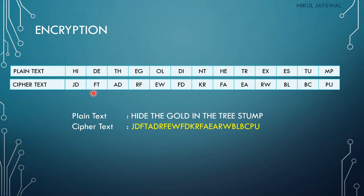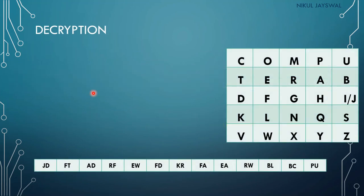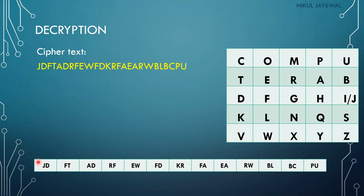For decryption, all the same steps are followed in reverse order. The cipher text is again divided into pairs of characters.